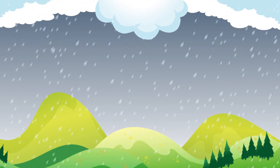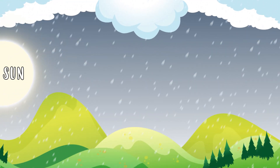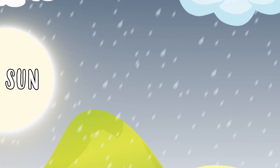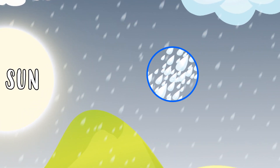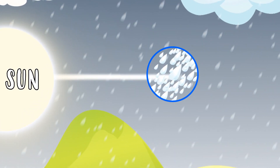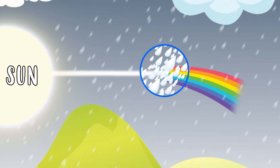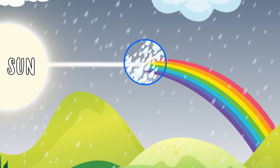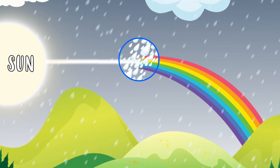This also happens when rain coincides with the sun. Let's take a look! Sunlight on its journey to Earth needs to pass through the rain droplets, and this is when the seven colours are dispersed, forming a rainbow!